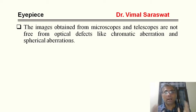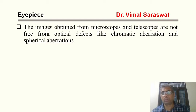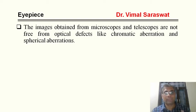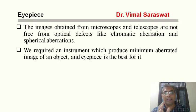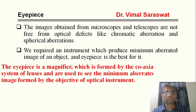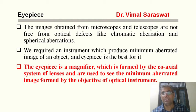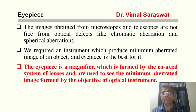Before moving to Huygens' eyepiece, what is an eyepiece? The images obtained from microscope and telescope are not free from optical defects like chromatic aberration and spherical aberration. We require an instrument which produces a minimum aberrated image of an object, and the eyepiece is the best for it. The eyepiece is a magnifier formed by a coaxial system of lenses and is used to see the minimum aberrated image formed by the objective of an optical instrument.